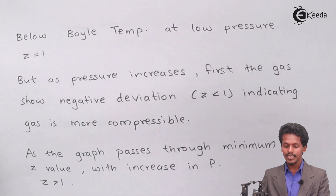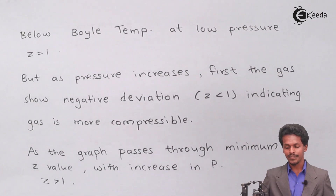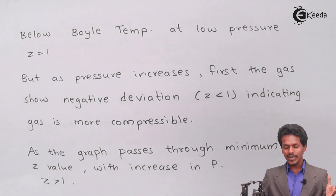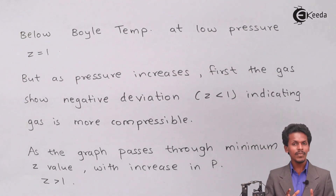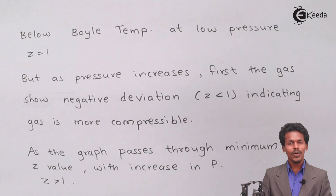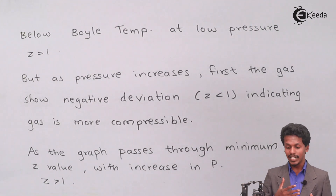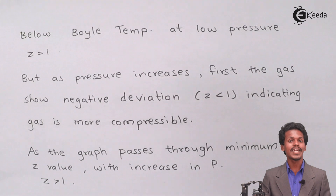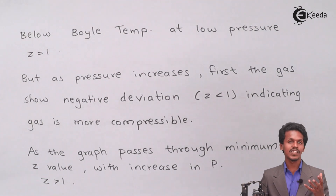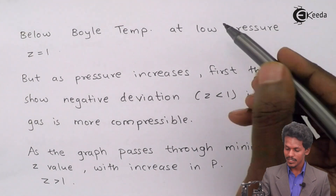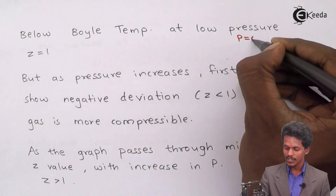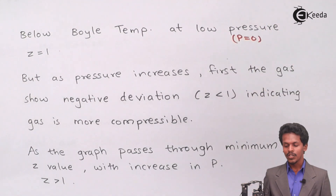At low pressure, when Z goes to 1 — that is, whenever the pressure is low and the temperature is also low — what happens is that at lower pressure, all gases behave ideally. That is, when pressure is essentially zero, therefore the value of Z approaches 1.